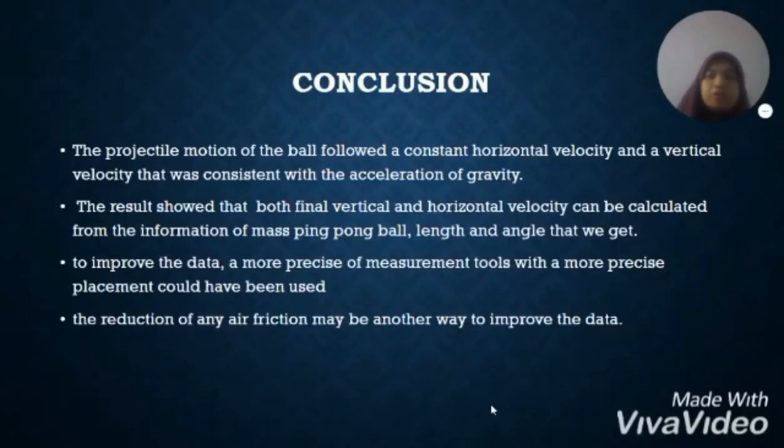In conclusion, the projectile motion of the ball followed a constant horizontal velocity and a vertical velocity that was consistent with the acceleration of gravity. The result showed that ball's final vertical and horizontal velocity can be calculated from the information of mass of ping pong ball, length and angle that we get. To improve the data, a more precise measurement tool with more precise placement could have been used. The reduction of any air friction may be another way to improve the data. That's all from us. Thank you.